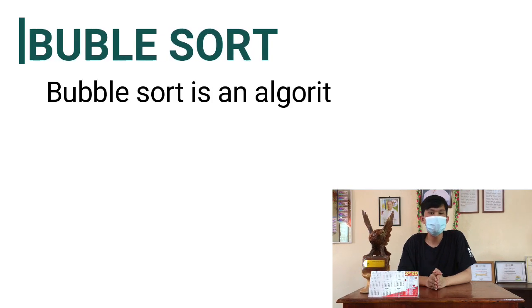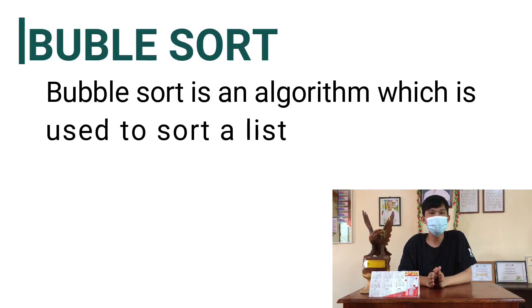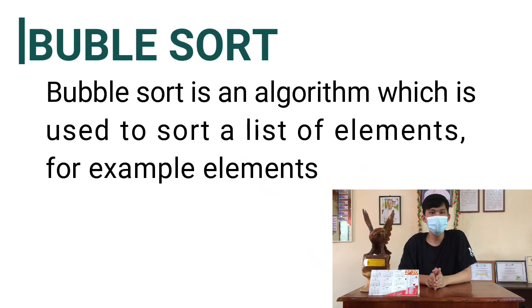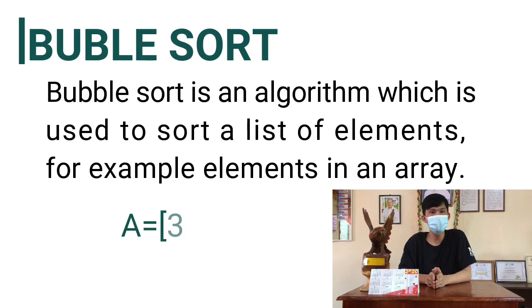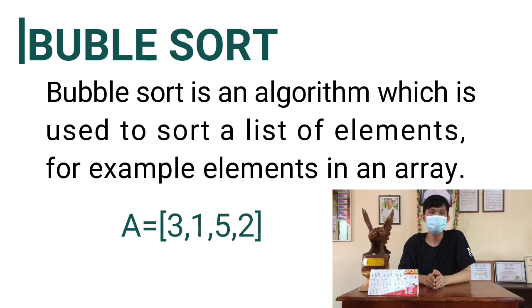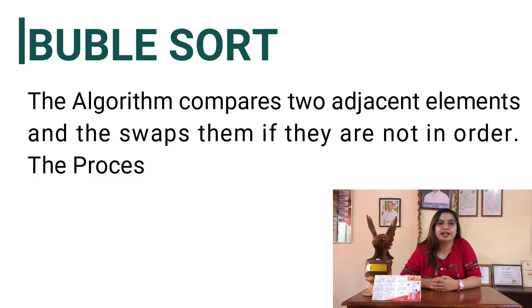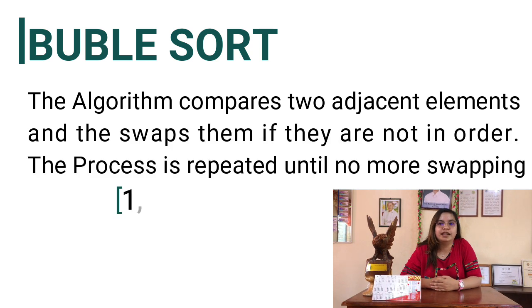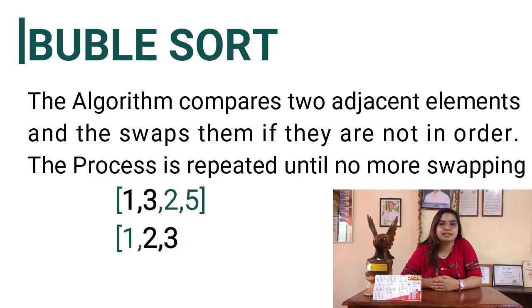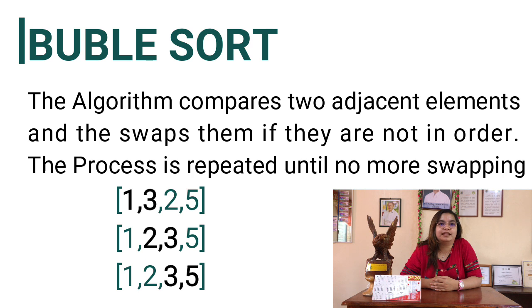Bubble sort is an algorithm that is used to sort elements — for example, elements in an array. The algorithm compares two adjacent elements and then swaps them if they are not in order. The process is repeated until no more swapping is needed.